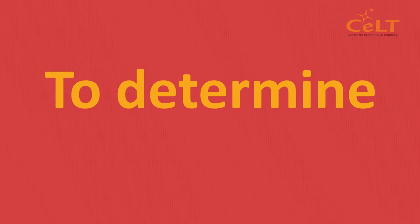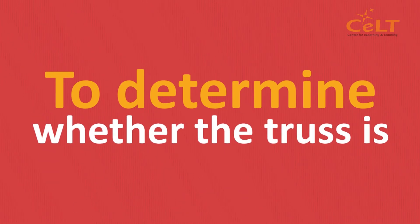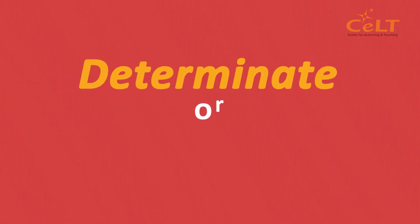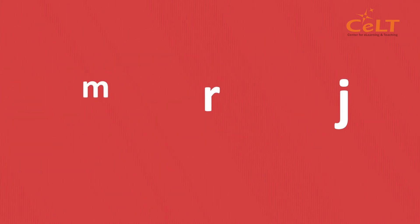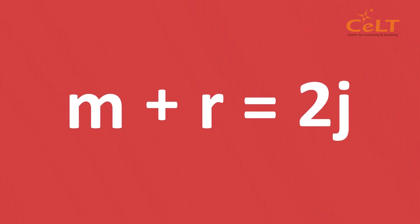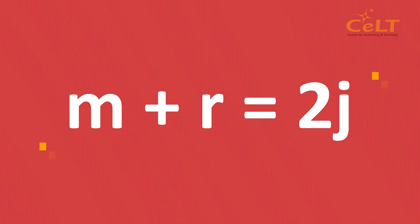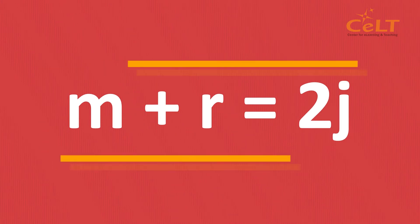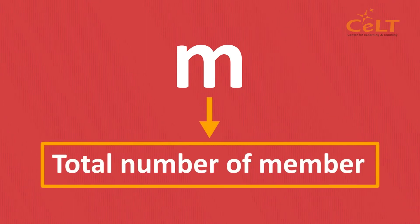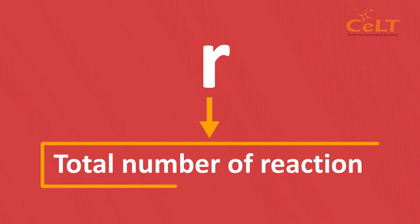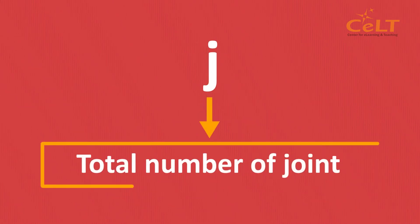Stability and determinacy of a truss depend on the support condition and number of internal members. To determine whether the truss is determinate or indeterminate, we can use the formula M plus R equals to 2J, where M is the total number of members, R is the total number of reactions, and J is the total number of joints.